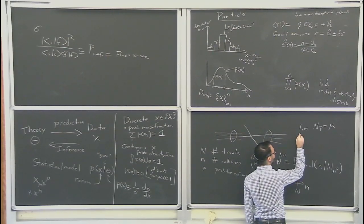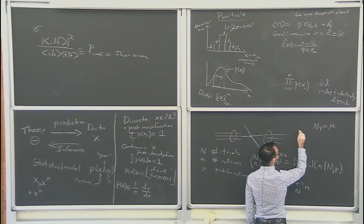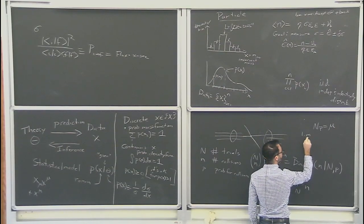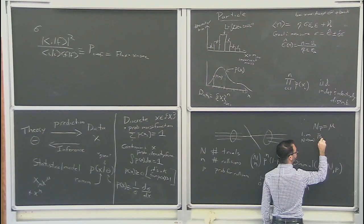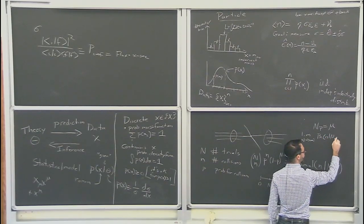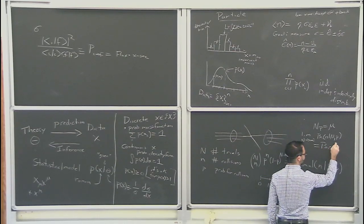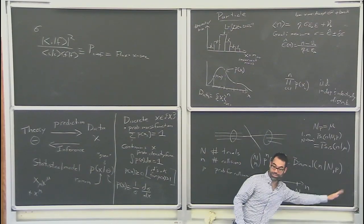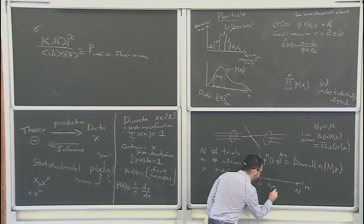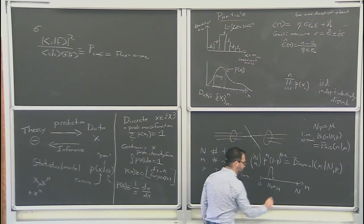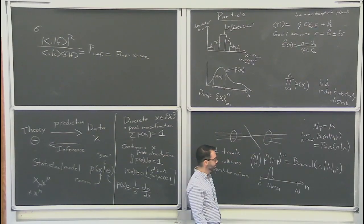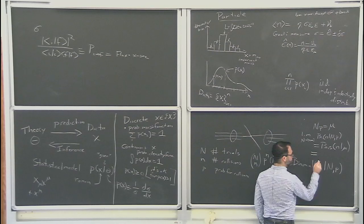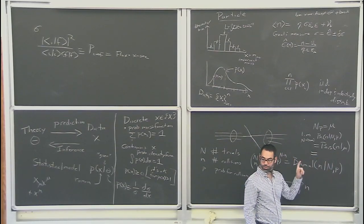There's a limit of the binomial process: you keep N×p equal to some constant μ and take the limit as capital N goes to infinity of the Binomial(n | N, p). That equals what's called a Poisson distribution, which only depends on one parameter. The expected number I'm calling μ, and you get a distribution peaked around μ described by a Poisson distribution.